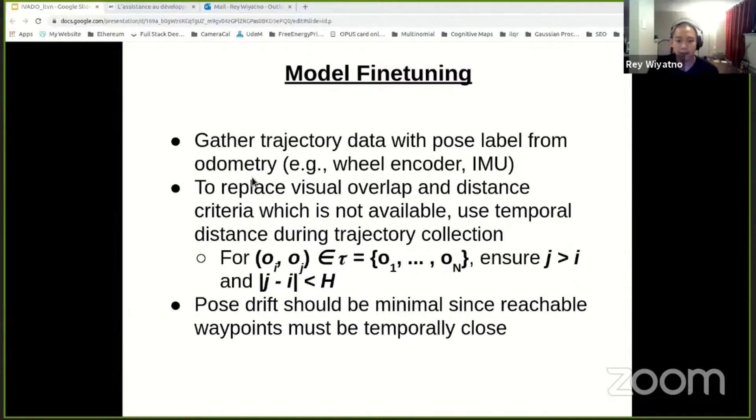However, since visual overlap and path length is not available in the real world, they are available in simulation but not in the real world, we use a proxy criterion by checking if the temporal distance between images in the trajectory are close. And note that this is also favorable because usually pose odometry can be noisy due to long-term drift, but because we require them to be temporally close, the drift should be minimal.